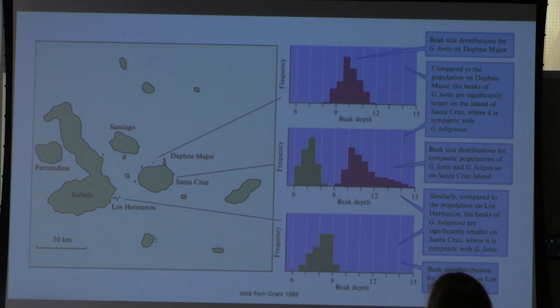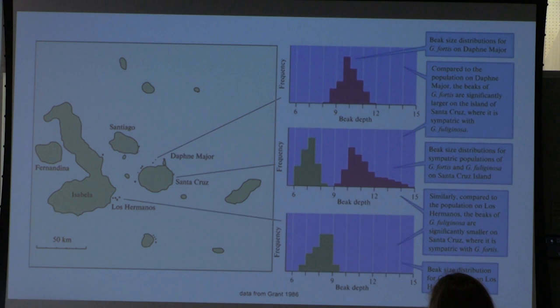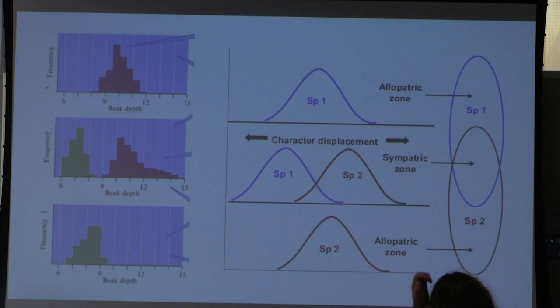Returning to character displacement with a real-life finch example: on Santa Cruz Island the populations were sympatric, while on Los Hermanos and Daphne Major they were allopatric. The only place the two finch species overlapped was Santa Cruz Island. Because they were sympatric there, we see a wider distribution of characteristics — more exaggerated — versus a much narrower distribution where they did not overlap. This confirms that real-life application of character displacement.